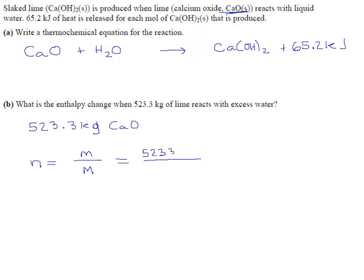And its molar mass is 40.08 plus 16 is 56.08 grams per mole. So 523,300 divided by 56.08 is 9,331.31, that's probably enough, moles of CAO.